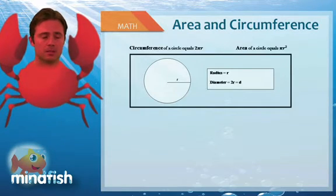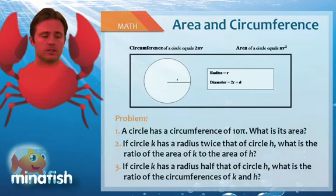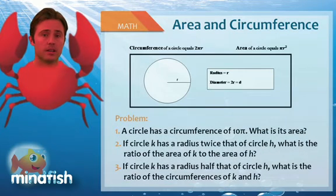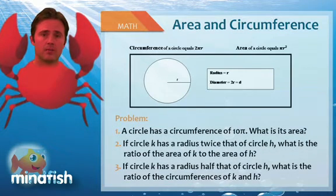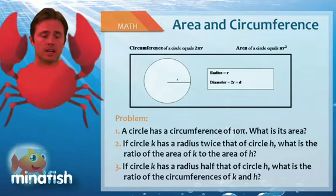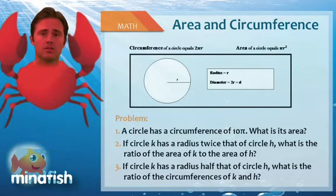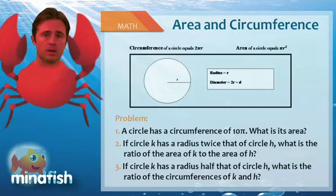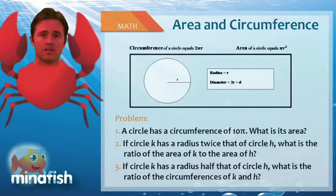So let's look at a few example problems here. If a circle has a circumference of 10π, what is its area? So what we want to do is write 10π is equal to 2πr. That allows us to solve for the radius as 5. Now it's easy to solve for the area. The area is πr squared. Inserting radius of 5, that would yield 25π.